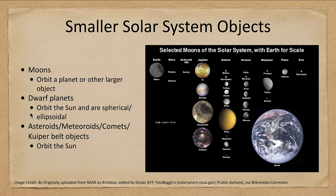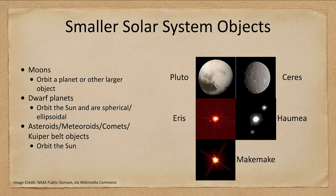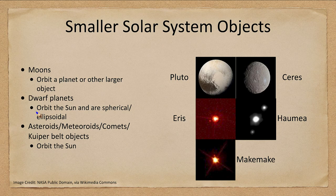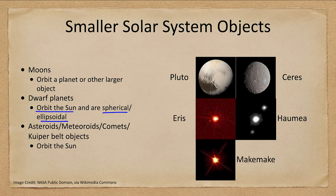So how about the dwarf planets? Well a dwarf planet has to do two things. It has to orbit the sun and they have to be spherical or ellipsoidal. So they meet those first two criteria for a planet but not the later one.